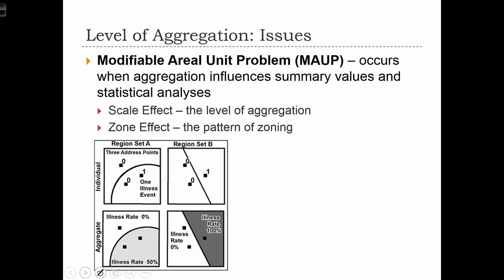The first issue that we are going to discuss is called the modifiable areal unit problem — the MAUP. The MAUP occurs when aggregation influences the summary values and statistical analyses of our data set. Specifically, the way in which we aggregate our data will affect the summary values within the zones that we are aggregating our data to.